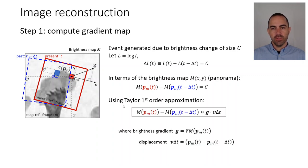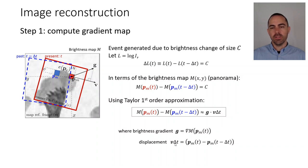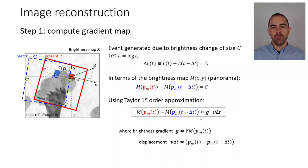Next, we use Taylor's first-order approximation. We have a difference of intensities or brightness on the map, and we approximate this by Taylor: it's the gradient of M at point p_m, dot product with a displacement delta_p, which we approximate as velocity times the interval delta_t. So this equation is a linearized version using first-order Taylor approximation on the left-hand side.